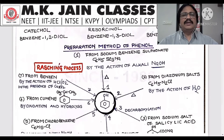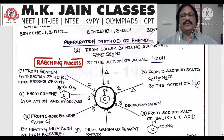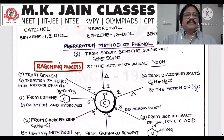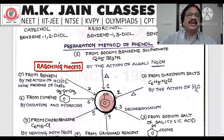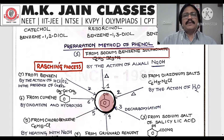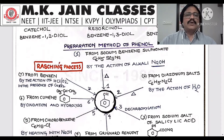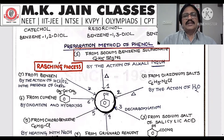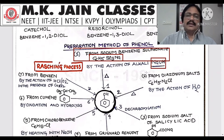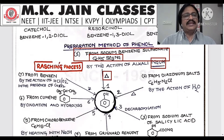First, we learn the power map — the power map for preparation of phenol. I consider the power map method the best, because all reactions come before you at a glance. We need to make phenol. The first method is from sodium benzene sulfonate (C6H5SO3Na). By the action of NaOH with heating, you will get phenol. This is called the Raschig process.